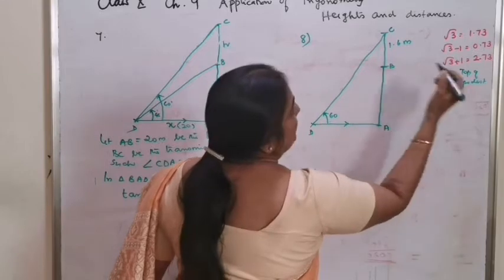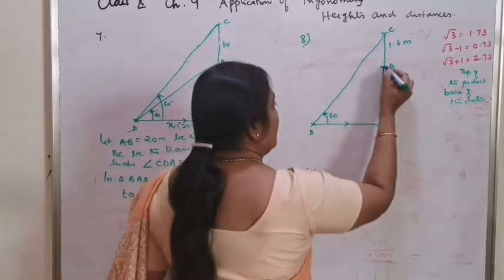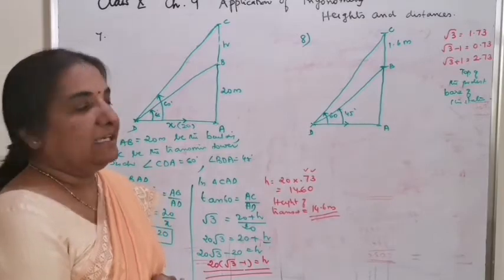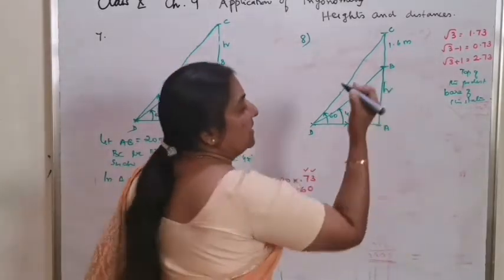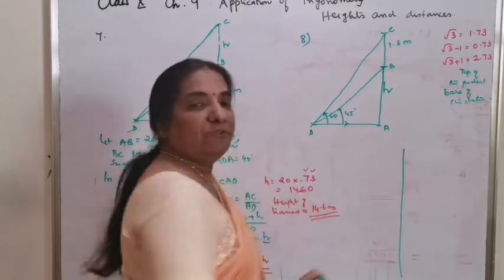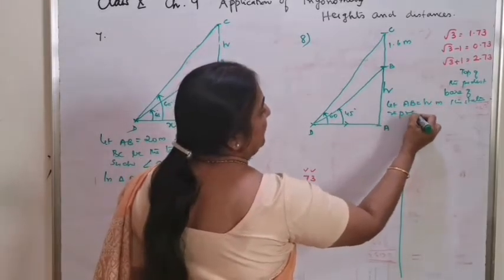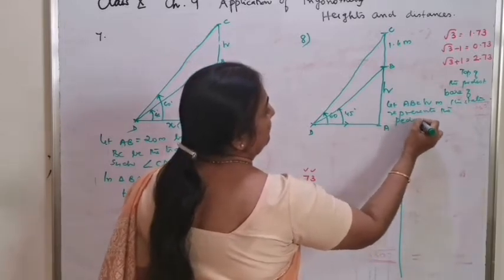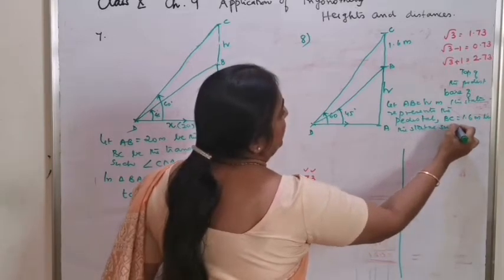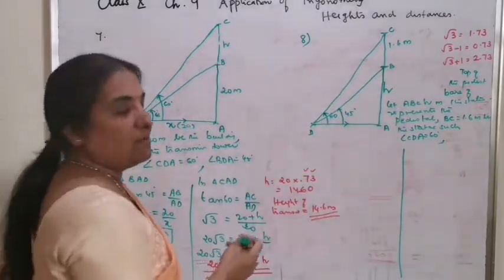From a point on ground, the normal eyesight is DA. Angle of elevation of the top of the statue is 60 degree, meaning angle ADC is 60 degree. And from the same point, the angle of elevation of the top of the pedestal is 45 degree. The smallest angle is 45 and the bigger angle is 60 degree. Find the height of the pedestal. Let AB equal H meter represent the pedestal, BC equal 1.6 meter be the statue, such that angle CDA equals 60 degree and angle BDA equals 45 degree.